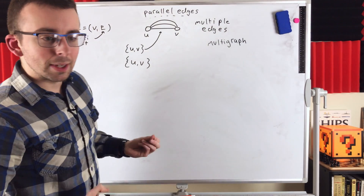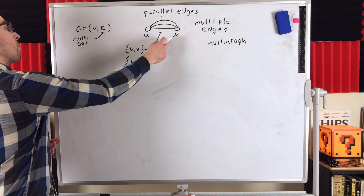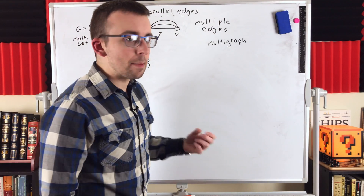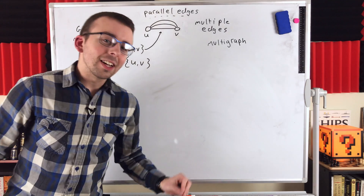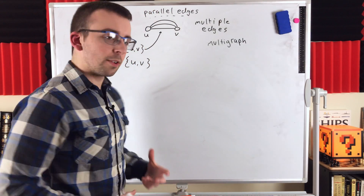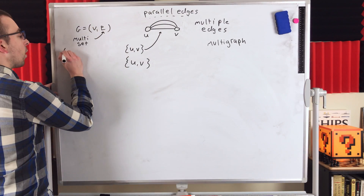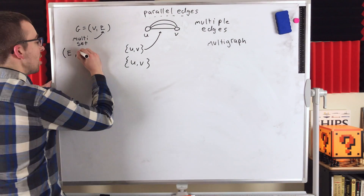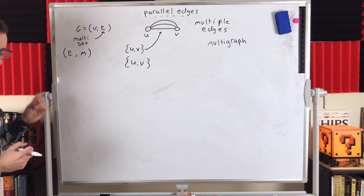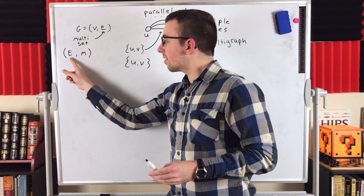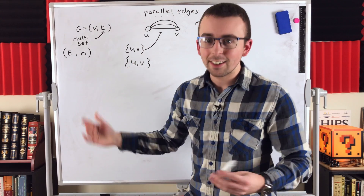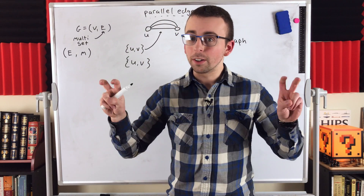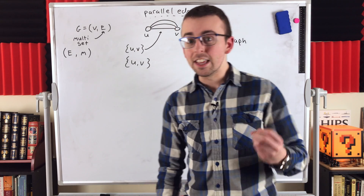Multi-sets do allow for repetition and can accurately represent a multi-graph with parallel edges having the same end vertices. We can think of a multi-set as being an ordered pair with some normal set as its base, and then also a function that we can call m. What the function does is take the elements from the set and map them to a natural number, called its multiplicity — the number of times it appears in the multi-set.